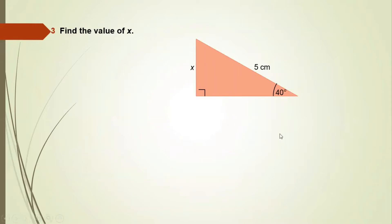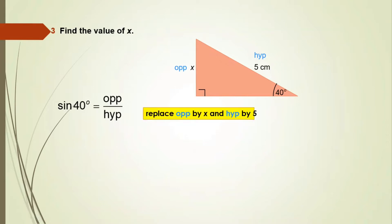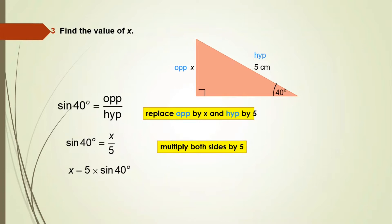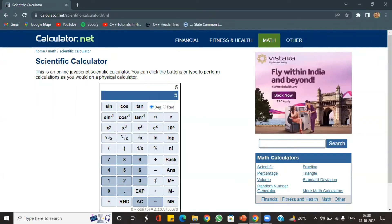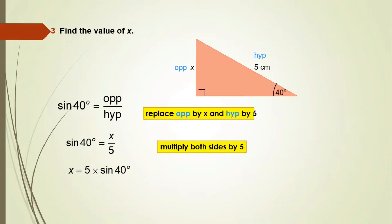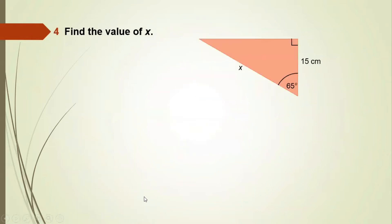Find the value of x again. Here x is the opposite side and the hypotenuse is 5, so we use the sine ratio. Sine 40 = opposite/hypotenuse = x/5. Multiplying both sides by 5, x = 5 × sine 40. Using the calculator, 5 × sin 40 = 3.2139, which to 3 significant figures is 3.21 centimeters.